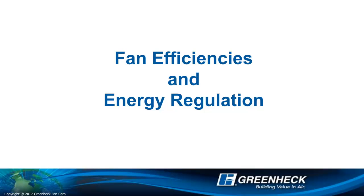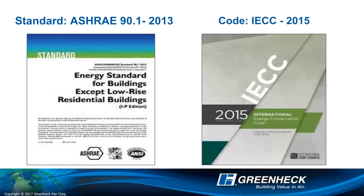This is a quick video of what is happening with fan efficiencies and energy regulation. ASHRAE Standard 90.1 is the basis for most energy codes in the United States. Standard 90.1 2013 is the most current version. In most states, the requirements of this standard get adopted as law into the energy code. The International Energy Conservation Code, also known as the IECC, is the energy code adopted in most states.